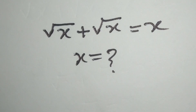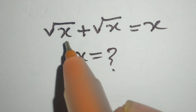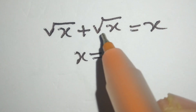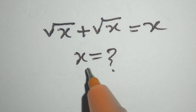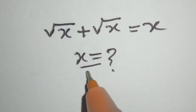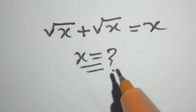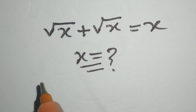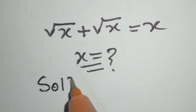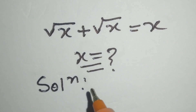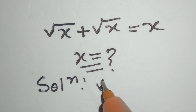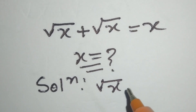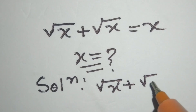Hello, this is a nice math problem. The square root of x plus the square root of x is equal to x. We have to find the value of x. Let's start the solution. The given equation is square root of x plus square root of x is equal to x.